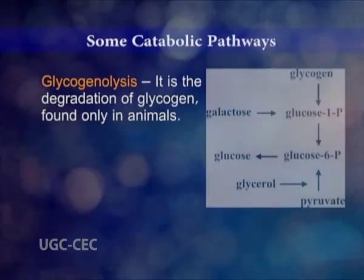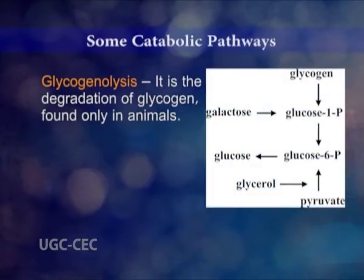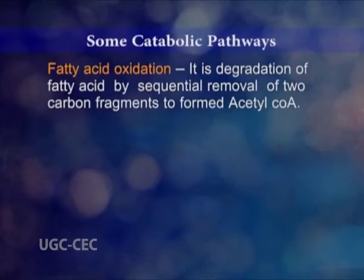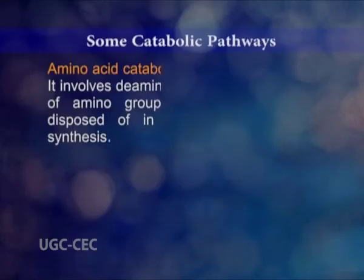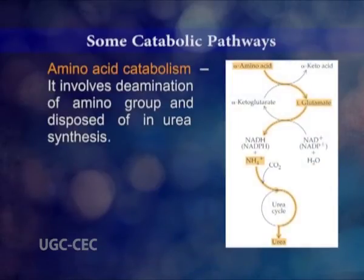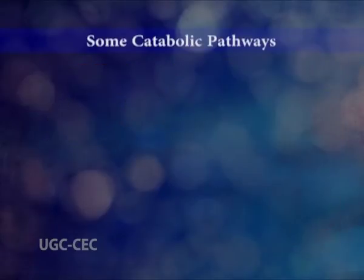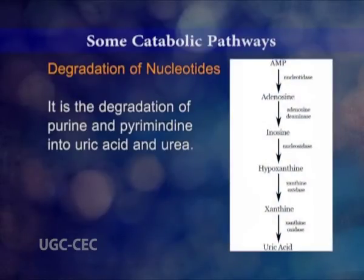Glycogenolysis — it is the degradation of glycogen, found only in animals. Fatty acid oxidation — it is degradation of fatty acid by sequential removal of two-carbon fragments to form acetyl-CoA. Then, amino acid catabolism — it involves deamination of amino groups and disposal in urea synthesis. And degradation of nucleotides — it is the degradation of purine and pyrimidine into uric acid and urea.